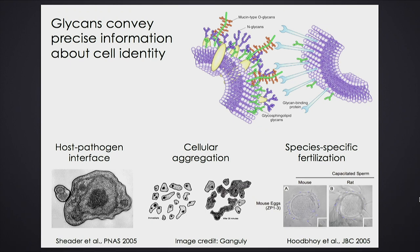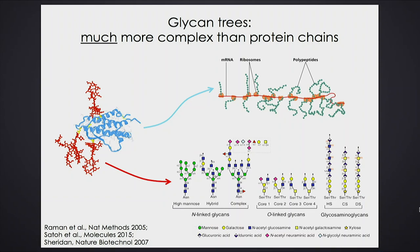A very important example: a mouse sperm doesn't bind to a rat egg because the sugars on the surface of the mouse egg are of the mouse type and not the rat type. If you made the sugars the rat type, the rat sperm would bind. Literally, these sugars are the place where the social life of the cell is determined — this is how a cell tells the rest of the world who it is.